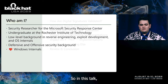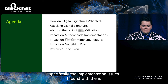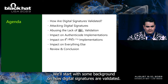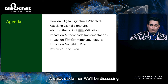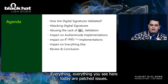So in this talk, we'll be exploring my work into digital signatures, specifically the implementation issues I found with them. We'll start with some background on how digital signatures are validated. Then we'll look at approaches for attacking them, which will tie into the systemic flaw I found and its impact on the ecosystem. A quick disclaimer: we'll be discussing several first- and third-party vulnerabilities in this talk. Everything you see here today are patched issues. We won't be dropping any zero days.